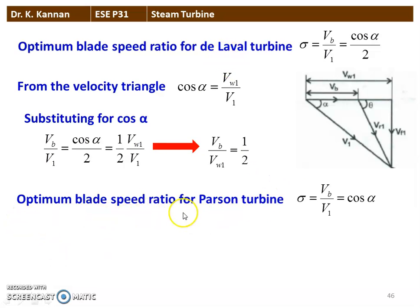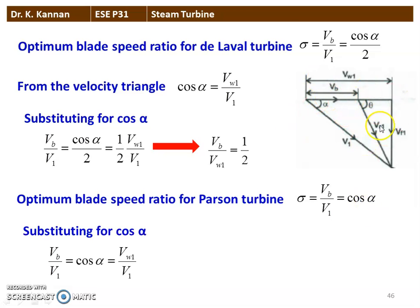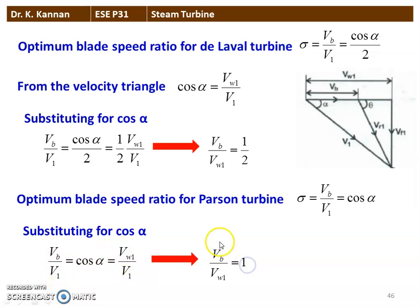For the Parsons turbine, the optimum blade speed: σ = V_B / V1 = cos α for the reaction turbine. Again referring to the velocity triangle, cos α = V_W1 / V1. Comparing: V_B / V1 = V_W1 / V1, so V_B / V_W1 = 1. Therefore for impulse turbine V_B / V_W1 = 1/2, and for reaction turbine V_B / V_W1 = 1 — that is the answer.